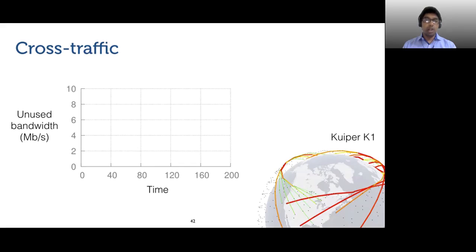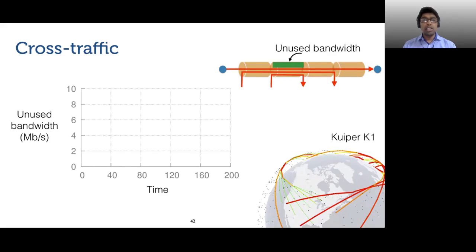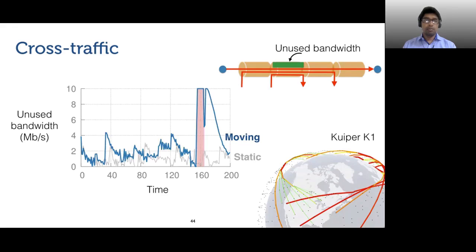Y-axis represents the unused bandwidth, which is the path's link capacity minus the utilization of the most congested on-path link at any time. In a static network with fixed routing and a fixed set of long-running TCP flows, we should expect this unused bandwidth to be smaller. This static network TCP behavior is shown as the gray line in the plot for the topology frozen at its t equals zero position. However, we find that in a dynamic LEO network with cross-traffic, the amount of unused bandwidth is larger than that in the static case.